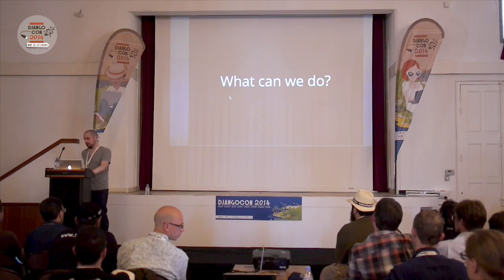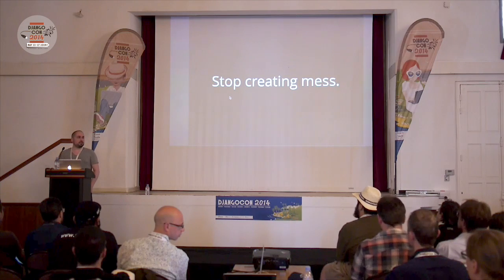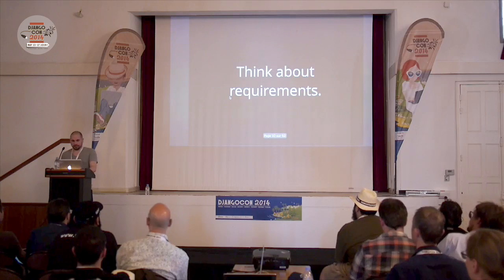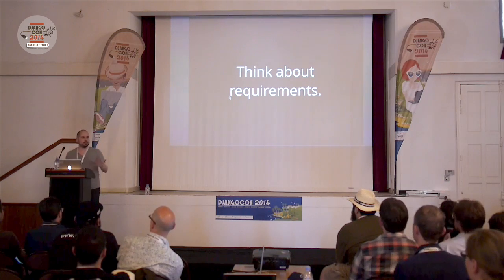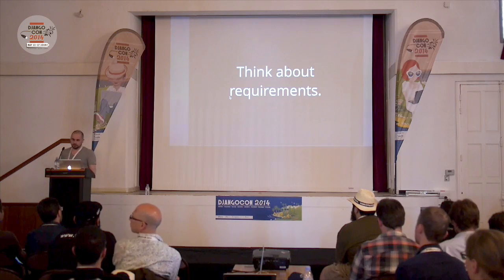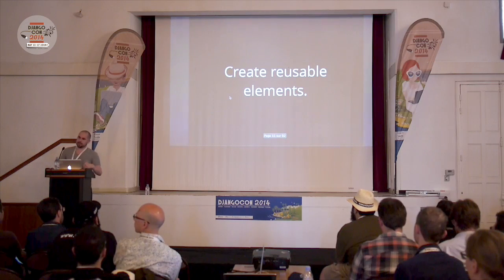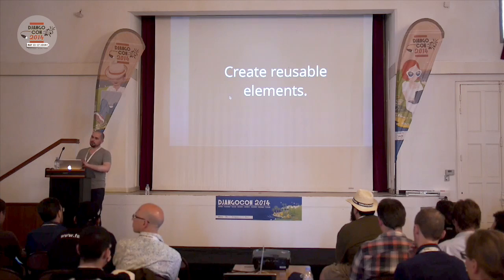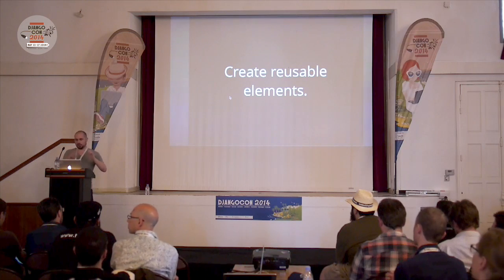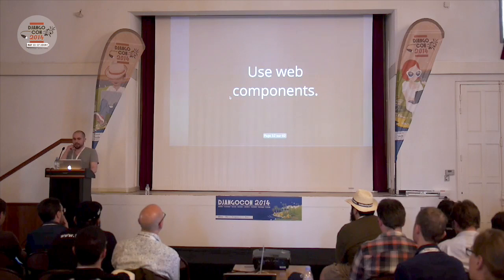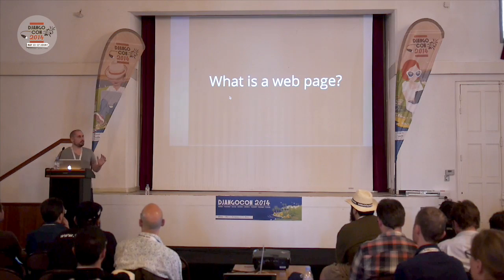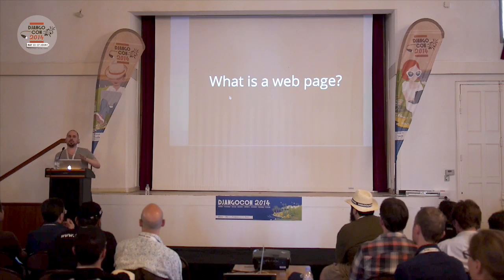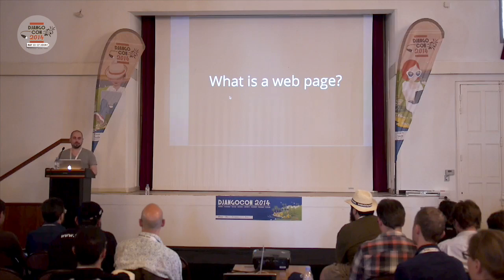So what can we do instead? The first thing is to stop creating apps the way we are used to doing, and then think about the requirements I talked about before — accessibility, usability, performance — and then do things like we always do in Python: creating reusable front-end blocks and using web components to do that. Now, before we see what web components do, here is some terminology that will help you.